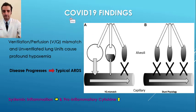This schematic shows the VQ mismatch phenomenon between the alveoli and capillary and how it happens. On the normal side, gas exchange occurs between the alveolar space and the capillary. As unventilated lung units progress with disease, we see decreased gas exchange and eventually shunt phenomenon between unventilated parts of the lung and the capillary at the end stage.